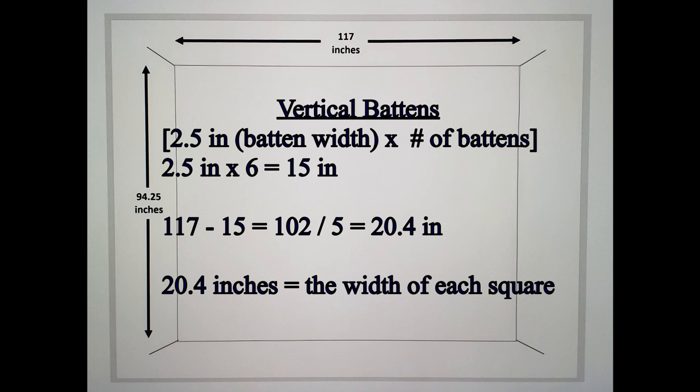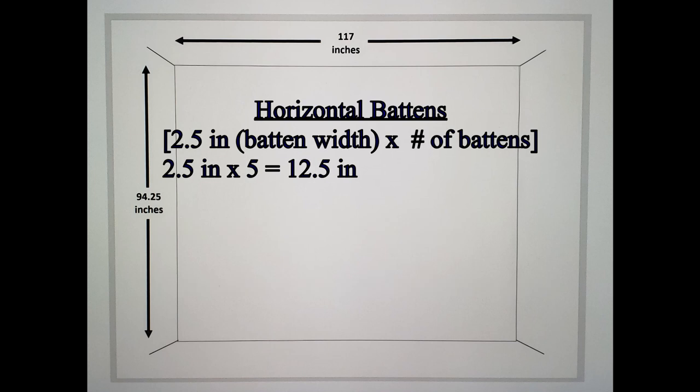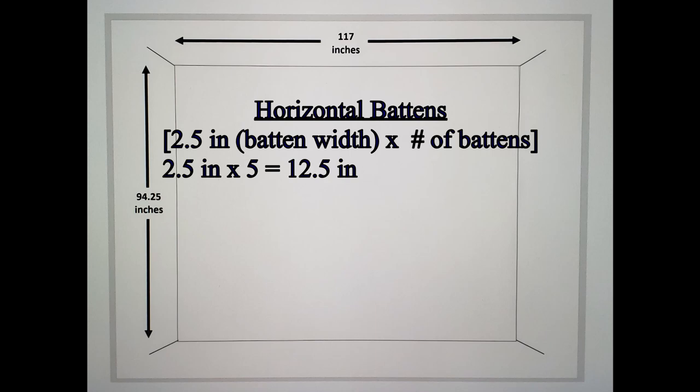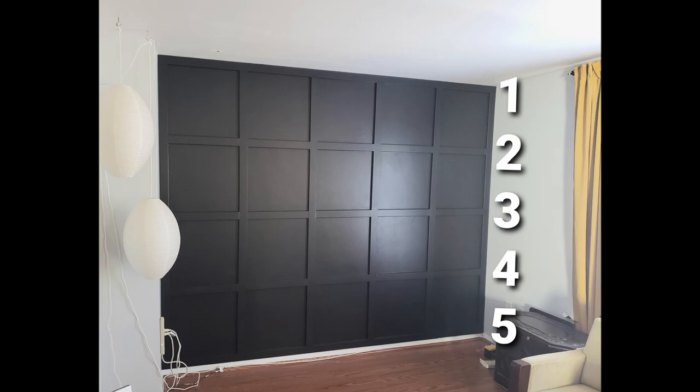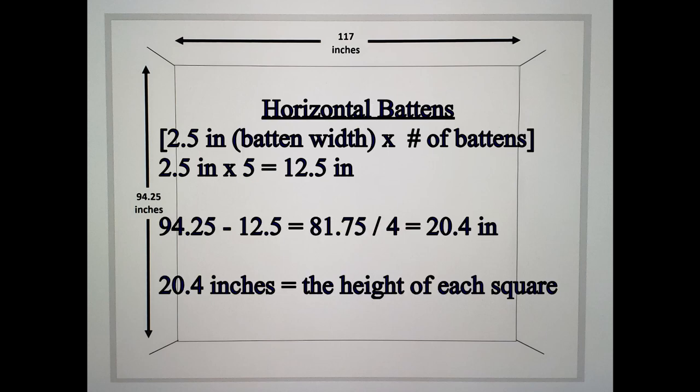All right now we got to do the same thing for the horizontal boards. Each board again is 2.5 inches. I multiplied that by five. Those are the number of horizontal boards I would have on the wall, that came up to 12.5 inches. Okay now my wall is 94.25 inches tall. I subtracted that by 12.5, that gave me 81.75 inches.